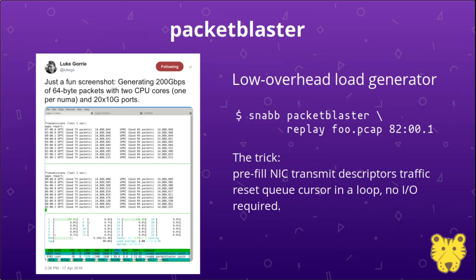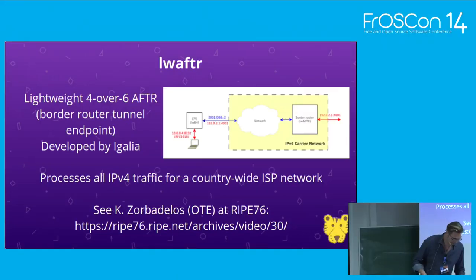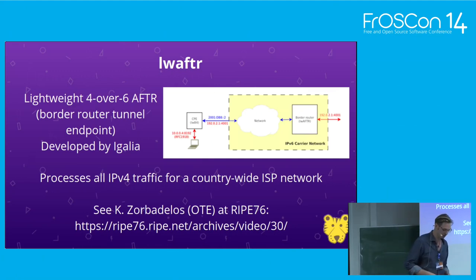The HTOP output shows the server is not heavily loaded while we're sending a lot of packets. The lightweight 4-over-6 address family translator developed by Egalia is an example of a full-blown network function built using Snap. This application is production-grade and handles an ISP's IPv4 traffic for a whole country. There's a link to a RIPE talk where this is discussed more. It's an IPv4 over IPv6 transitional technology — Snap is in production.